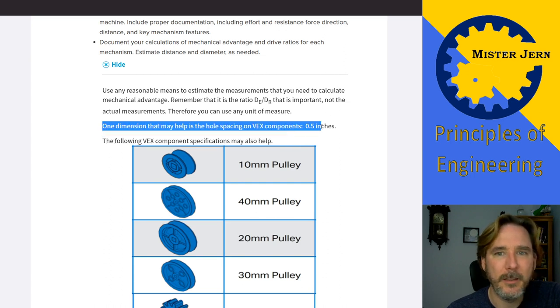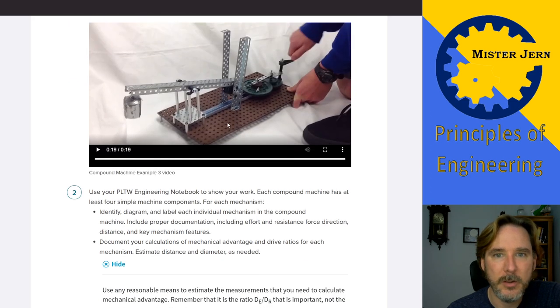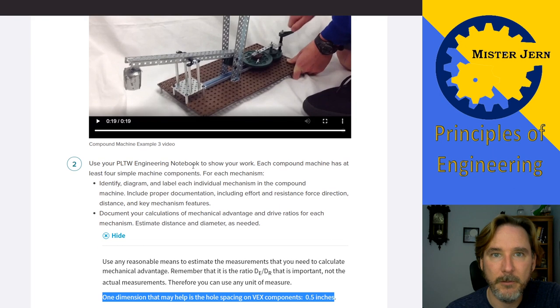So whatever method you use to measure one, use that same method and units to measure the other. Okay. One thing to note is that the little spacings, the holes of the VEX components are very standard at half an inch apart. So if you look at like all these little holes here, you're going to see every little hole is half an inch apart, 0.5 inches. So that could help you estimate the length of things.